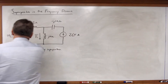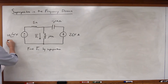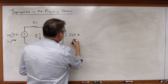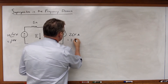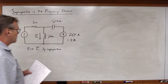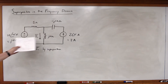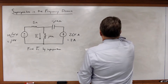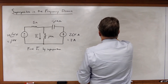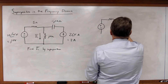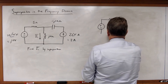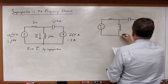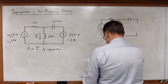I've got 10 at a phase angle of 90 degrees — that becomes J10 volts. I've got 2 at a zero-degree phase angle amps, so that becomes 2 amps in rectangular form. If I zero out one and then the other, I'll get two partial circuits.